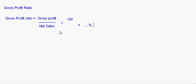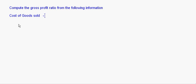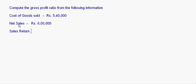Let us look at some questions where we will be computing the gross profit ratio. In this first question: compute the gross profit ratio from the following information. Cost of goods sold is given as rupees 5,40,000; net sales is given as rupees 6 lakhs; and sales return is given as rupees 10,000.